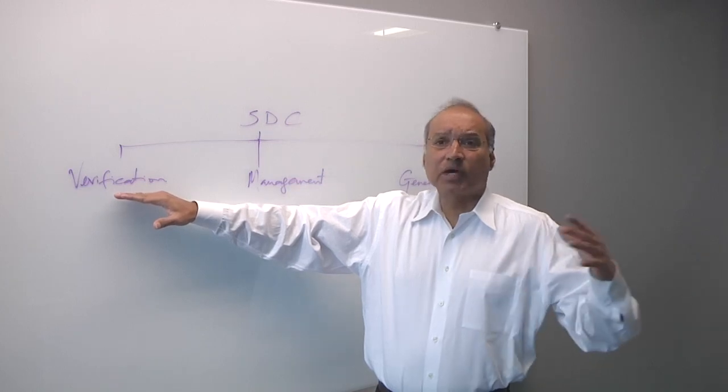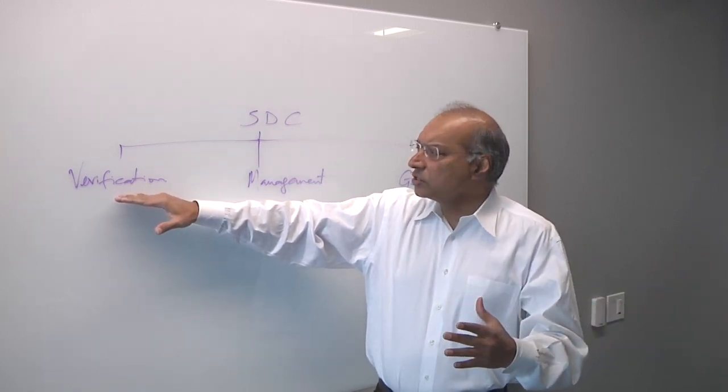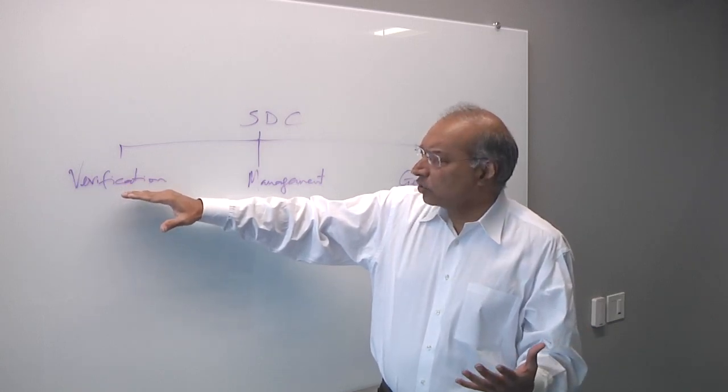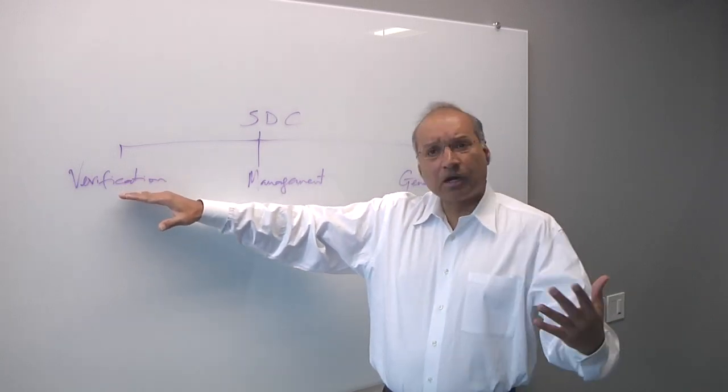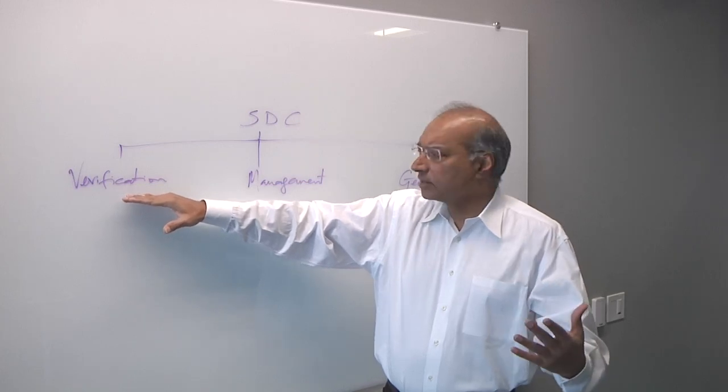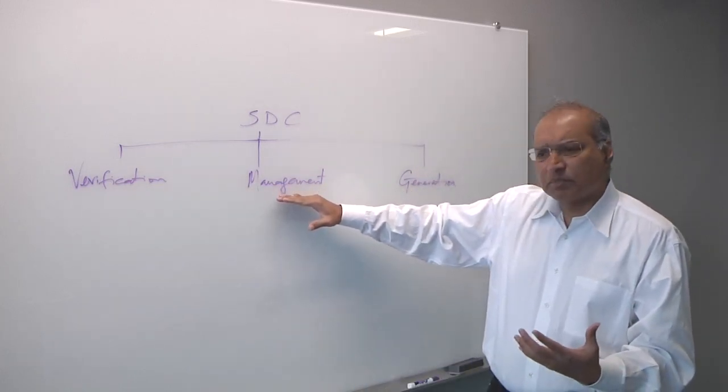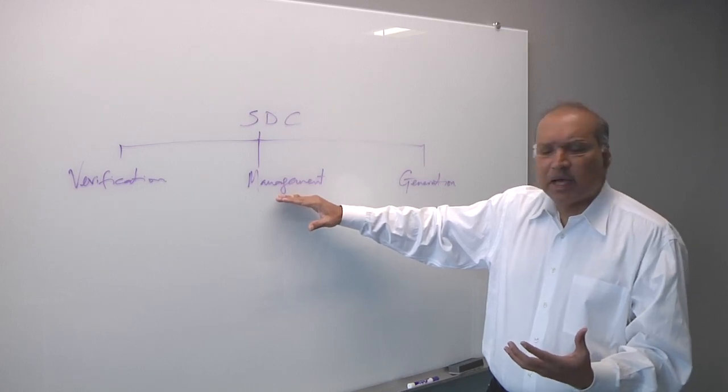If we find that the SDC is incorrect, we might actually have found a design bug and it requires a design change, not an SDC change. So this needs to happen very early in the design methodology. So verification is a key aspect. Are your constraints correct? Are they complete? And then the next aspect is just as a matter of doing chip design, you need to manage your constraints.